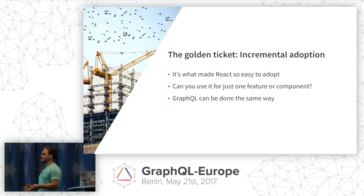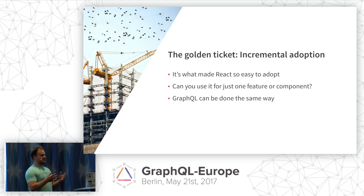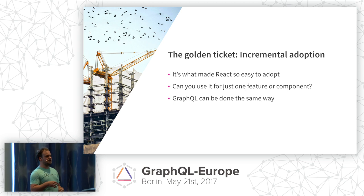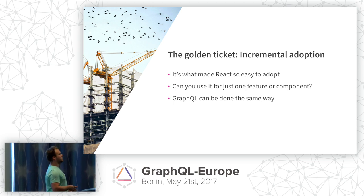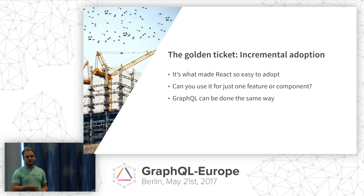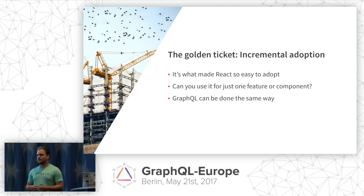The golden ticket for any technology to become really popular is incremental adoption. I think you've all heard of React, and one of the biggest reasons React was successful is that you could get started with it super easily without worrying about rewriting your whole app or changing anything significant. You could take exactly one component in your app, rewrite it in React, import it, and deploy it to production right away. I believe GraphQL can be done the exact same way.